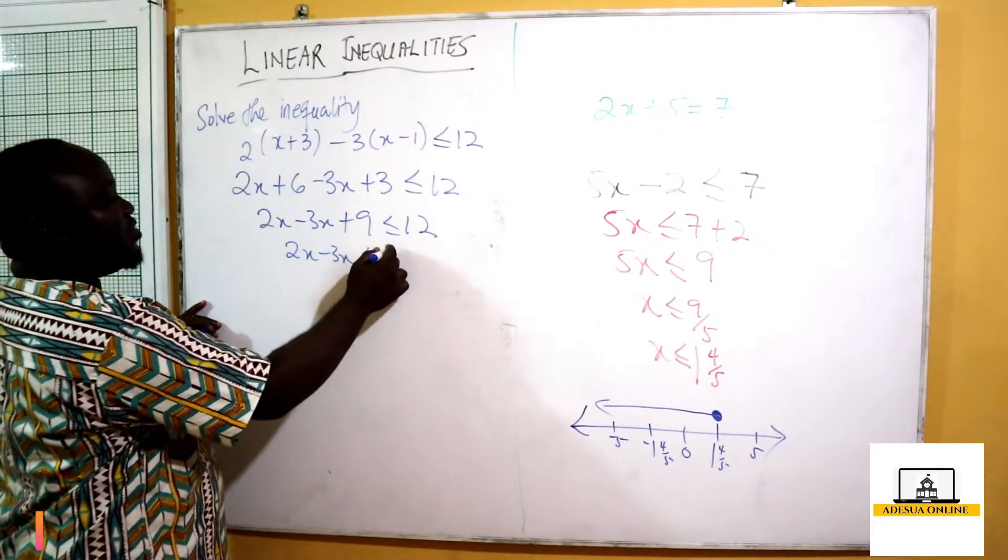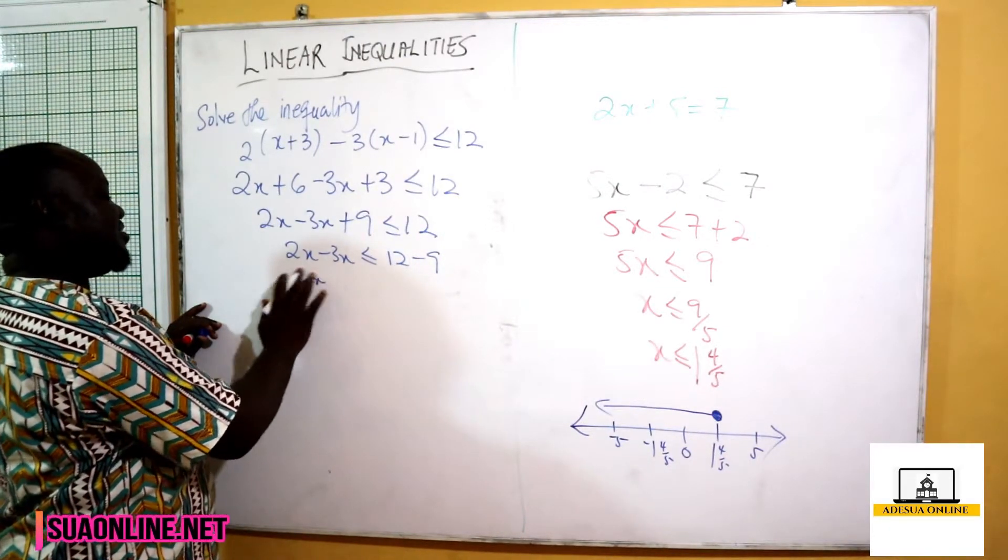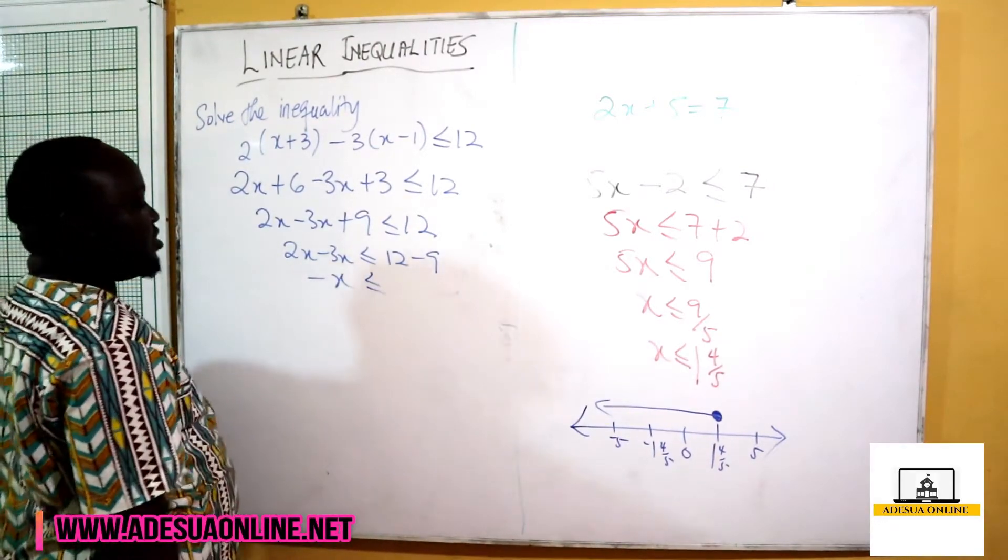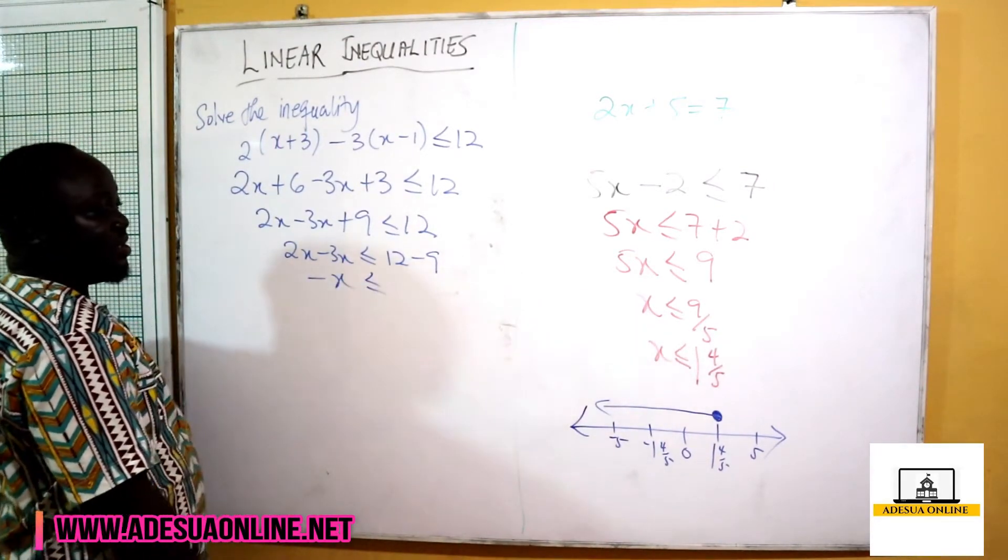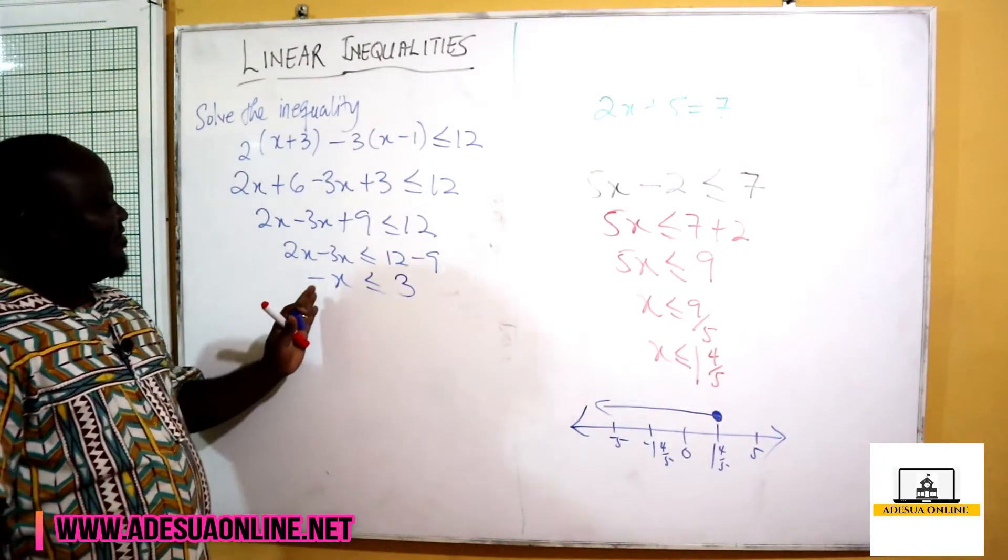So 2x minus 3x gives us minus x is less than or equal to, and 12 minus 9 is positive 3. Now we can't leave our solution as minus x.